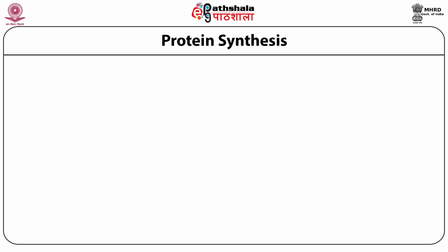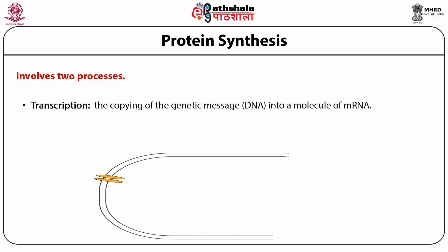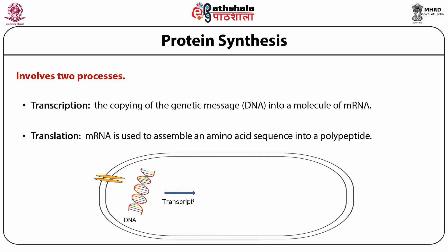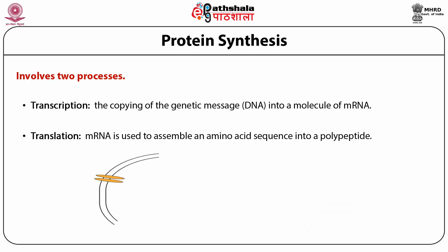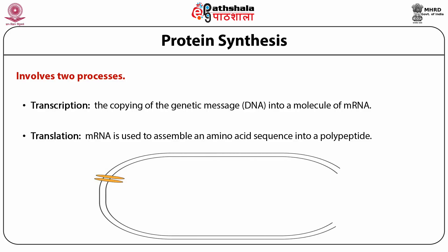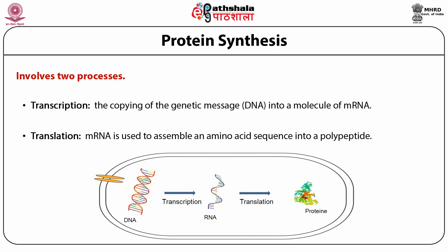Protein synthesis involves two major processes: transcription and translation. In transcription, the genetic message in DNA is copied into a molecule of mRNA using RNA polymerases. Once mRNA forms, it comes out from the nucleus and reaches the ribosomes. At the ribosomes, using the translation machinery, the mRNA is translated into polypeptide chains or proteins. The proteins then come out of the ribosome, fold into different structures, and can act as molecular machines.